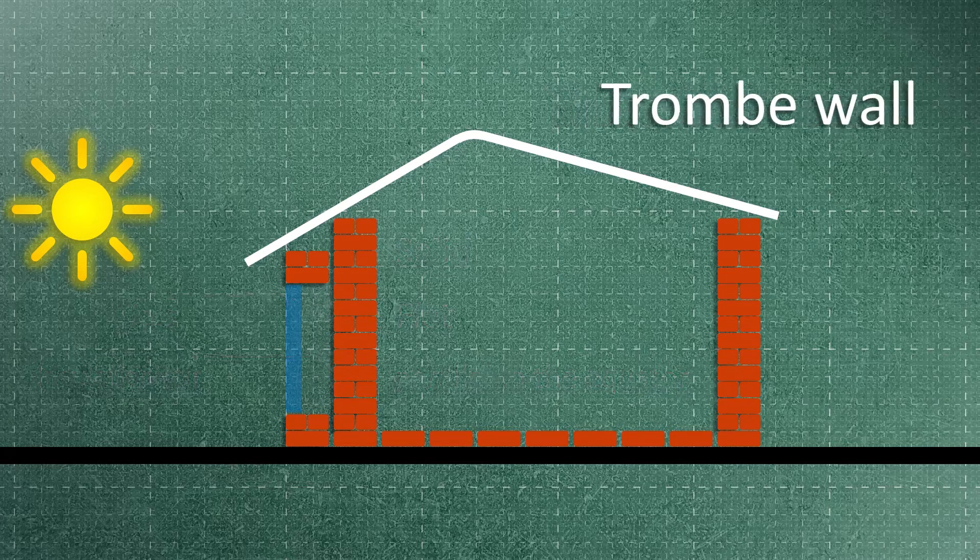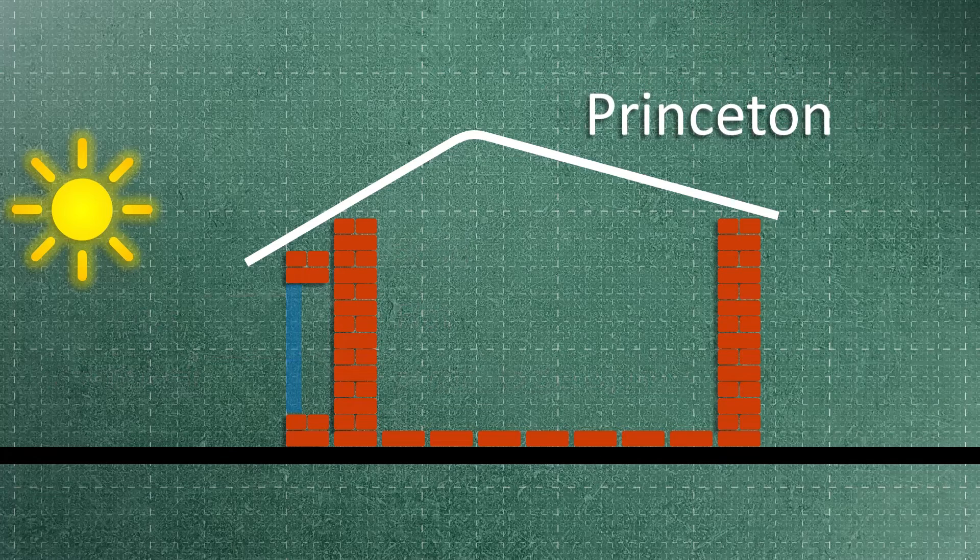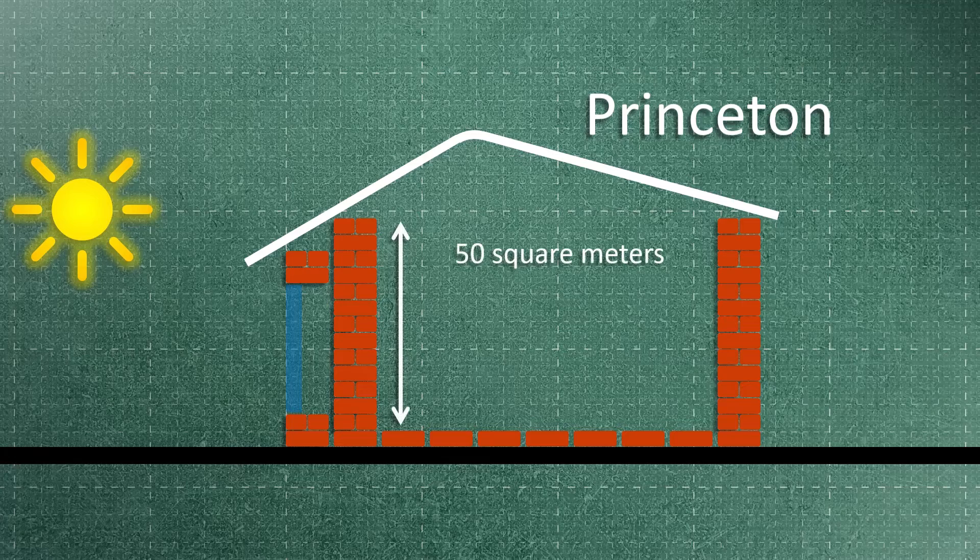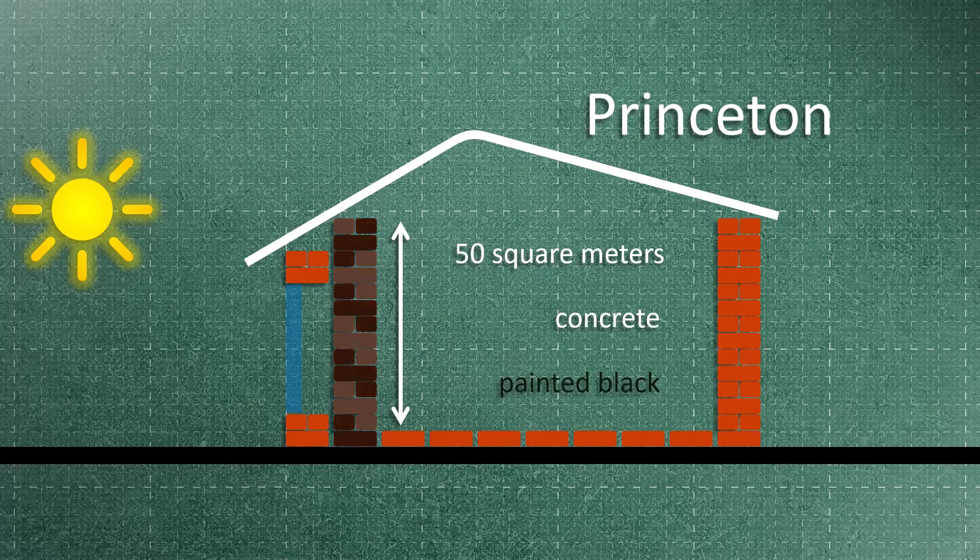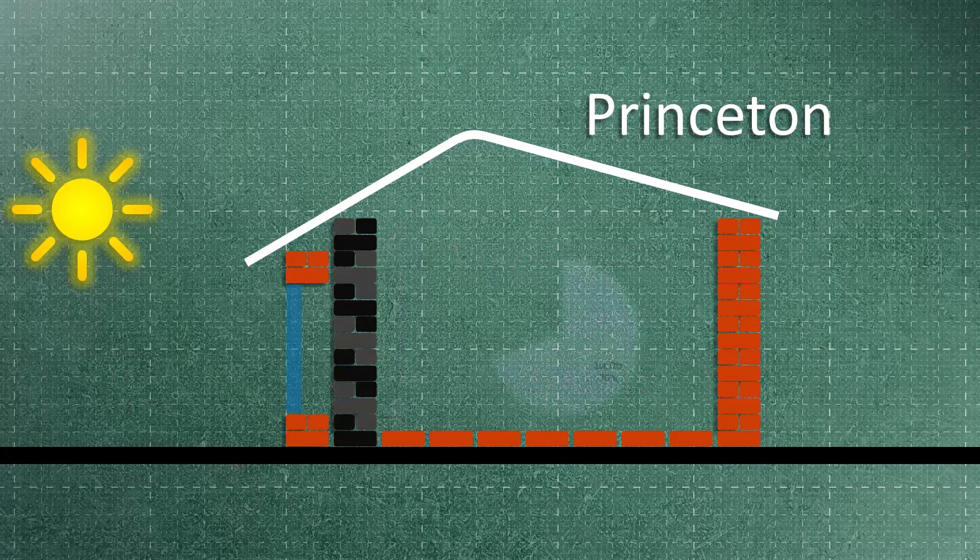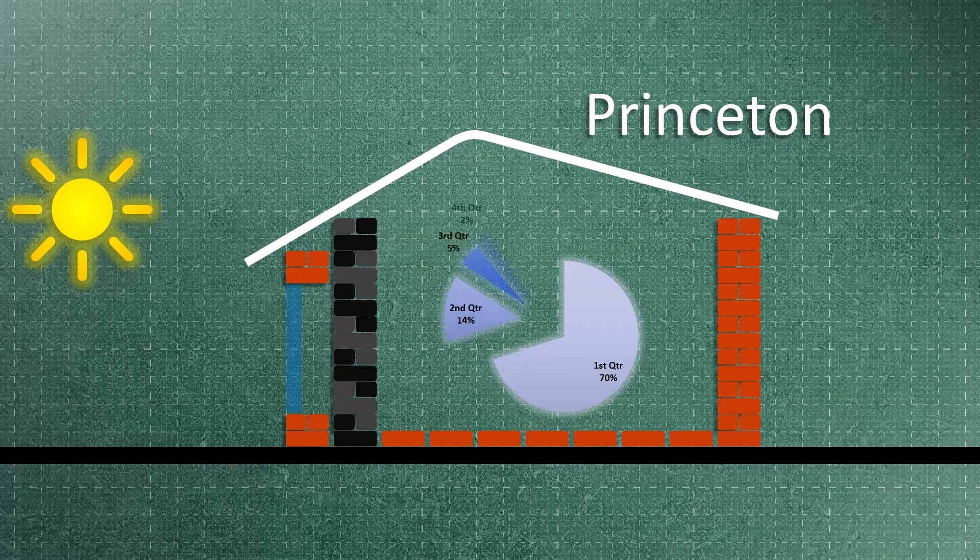For the first time, the Trombe wall was used in a house located in Princeton. This two-story building had 50 square meters of Trombe wall, which was made of concrete and painted black. According to the data collected from this building, the Trombe wall system reduced heating fees by 70 percent.